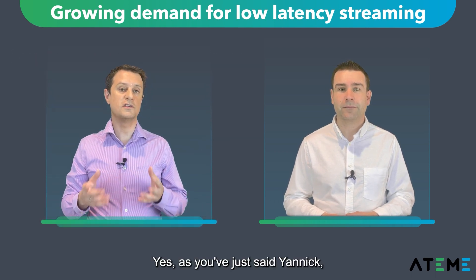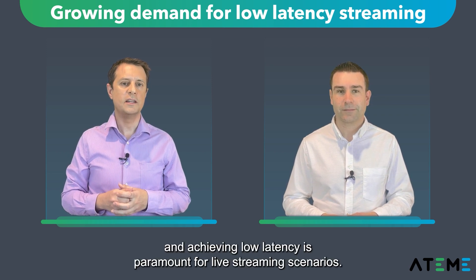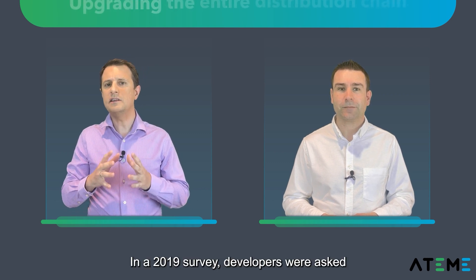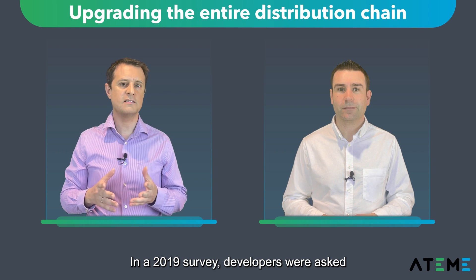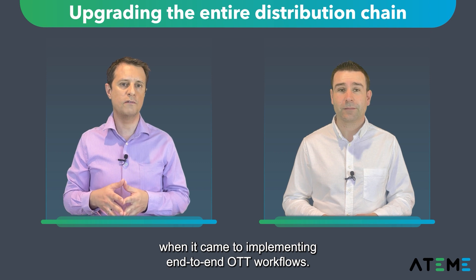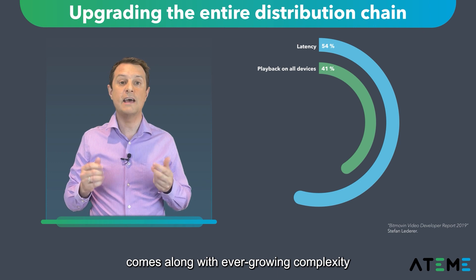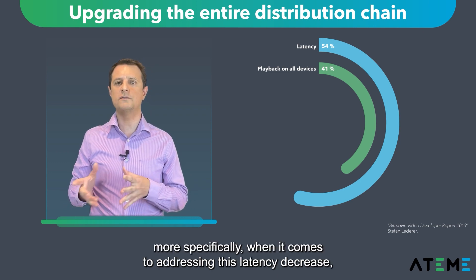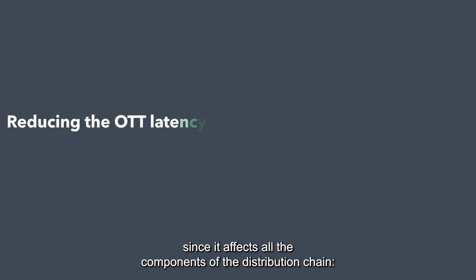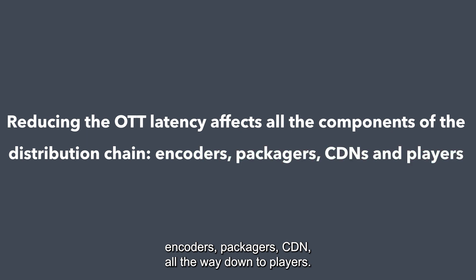As Yannick just said, nowadays many applications work better with low latency, and achieving low latency is paramount for live streaming scenarios. In a 2019 survey, developers were asked what technology was the most challenging when it came to implementing end-to-end OTT workflows. The results clearly show that this ever-growing demand comes along with an ever-growing complexity — more specifically when it comes to addressing this latency decrease, since it affects all the components of the distribution chain: encoders, packagers, CDN, all the way down to players.